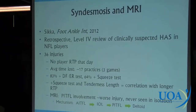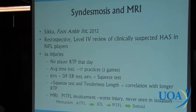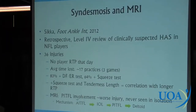Should we be getting MRIs? A level four study in 2012 of NFL players with suspected high ankle sprains gave us some interesting information. Nobody was able to return to play that day — that's usually the case with a high ankle sprain, unlike a lateral ankle sprain. Average time lost was about 17 practices and approximately three games. The dorsiflexion external rotation test and squeeze test were the best tests, with the Klieger test 83% sensitive. A positive squeeze test and significant proximal tenderness correlated with longer return to play. If the posterior syndesmosis is involved on MRI, that's a worse injury with a longer return to play.